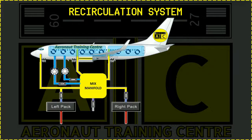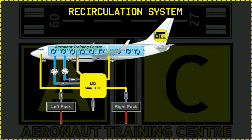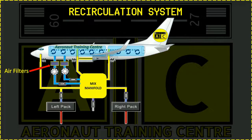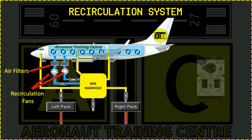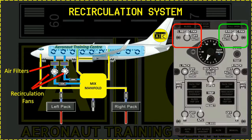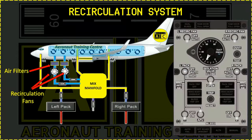The recirculation system supplies air for ventilation to the passenger cabin by collecting cabin air and mixing it with pack air in the main distribution manifold. The objective is to reduce the demand for fresh air from the pneumatic system, engine bleed system and air conditioning packs. All recirculated air is pulled through an air filter to remove very small particles, bacteria and microorganisms. Recirculation is achieved with a left and a right recirculation fan, operated with the left and right recirculation fan switches in the air conditioning panel, which have OFF and AUTO positions.